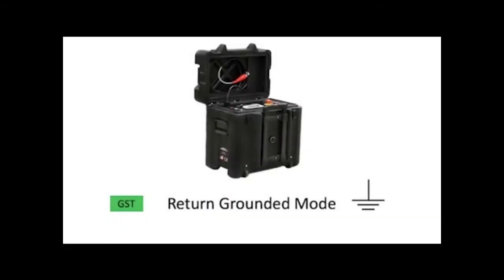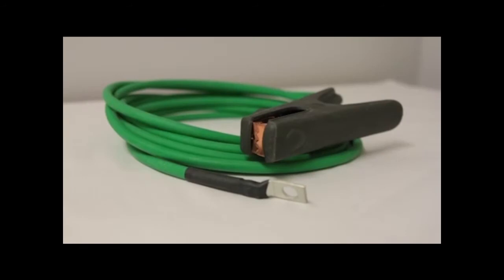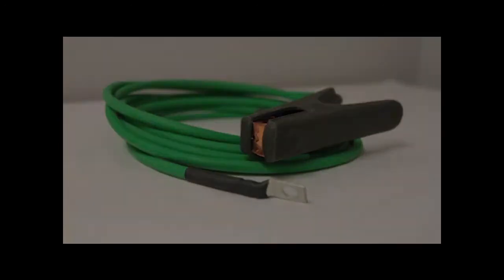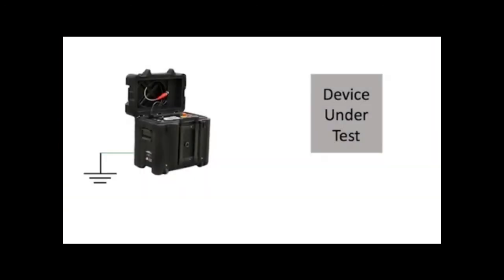First, we will review return grounded mode. To begin, make sure the DC HiPOT is grounded using the grounded or earth cable that comes from the DC HiPOT. For safety reasons, this ground cable should be the first lead to be connected and the last to be disconnected.